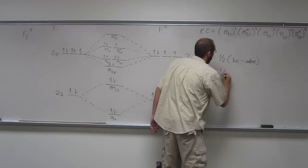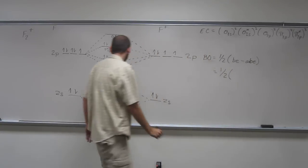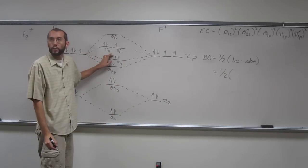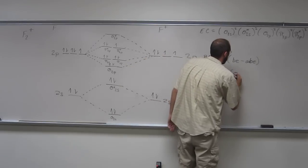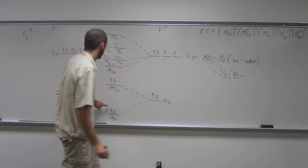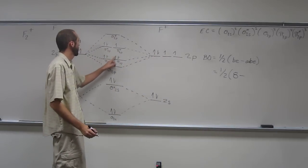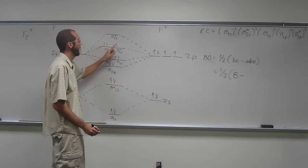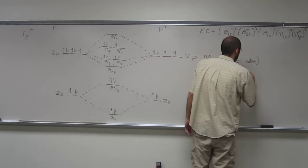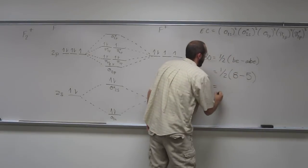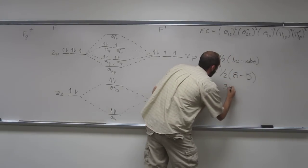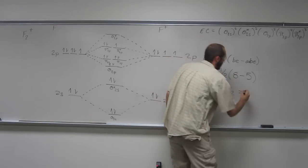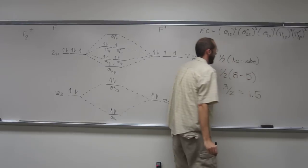And then the bond order is one half the bonding electrons minus the anti-bonding electrons. So one half, 2, 4, 6, 8, right? Eight bonding electrons. So one half. And anti-bonding: 2, 1, 2, 3, 4, 5. So three halves, right? Three divided by two: 1.5. That's the bond order.